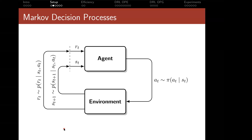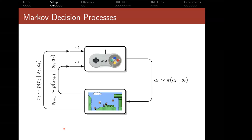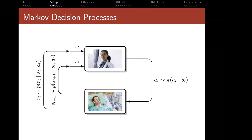The model we deal with is the central model for reinforcement learning: the Markov Decision Process or MDP. In an MDP, an agent interacts with an environment. The agent can be a human or machine playing a video game, or a doctor treating a patient. The environment is the Mario game, or the body of a patient — how does health evolve when we take different actions?